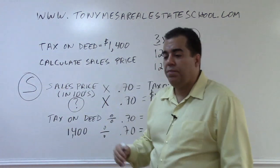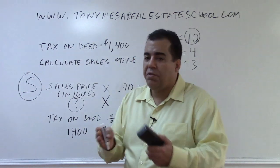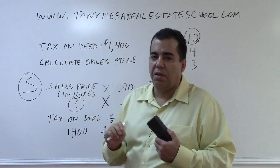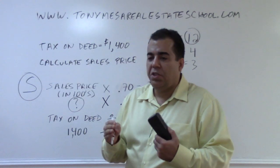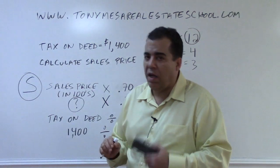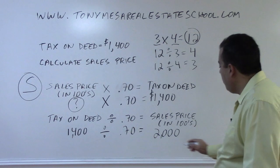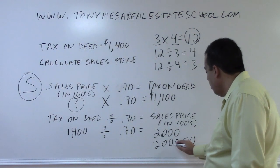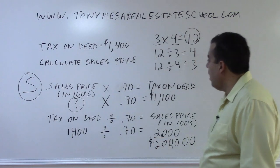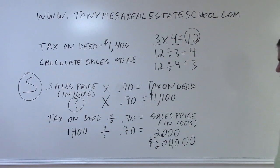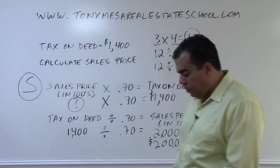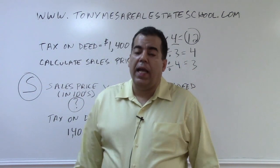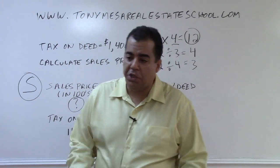Remember, when going in the normal direction you draw the line between the tens and hundreds and chop off the last two zeros. Here we're going in reverse, so we take that 2,000 and add two zeros to it, giving us $200,000 as the sales price. On the state exam they sometimes give you the tax on the deed and you have to calculate from that the sales price.